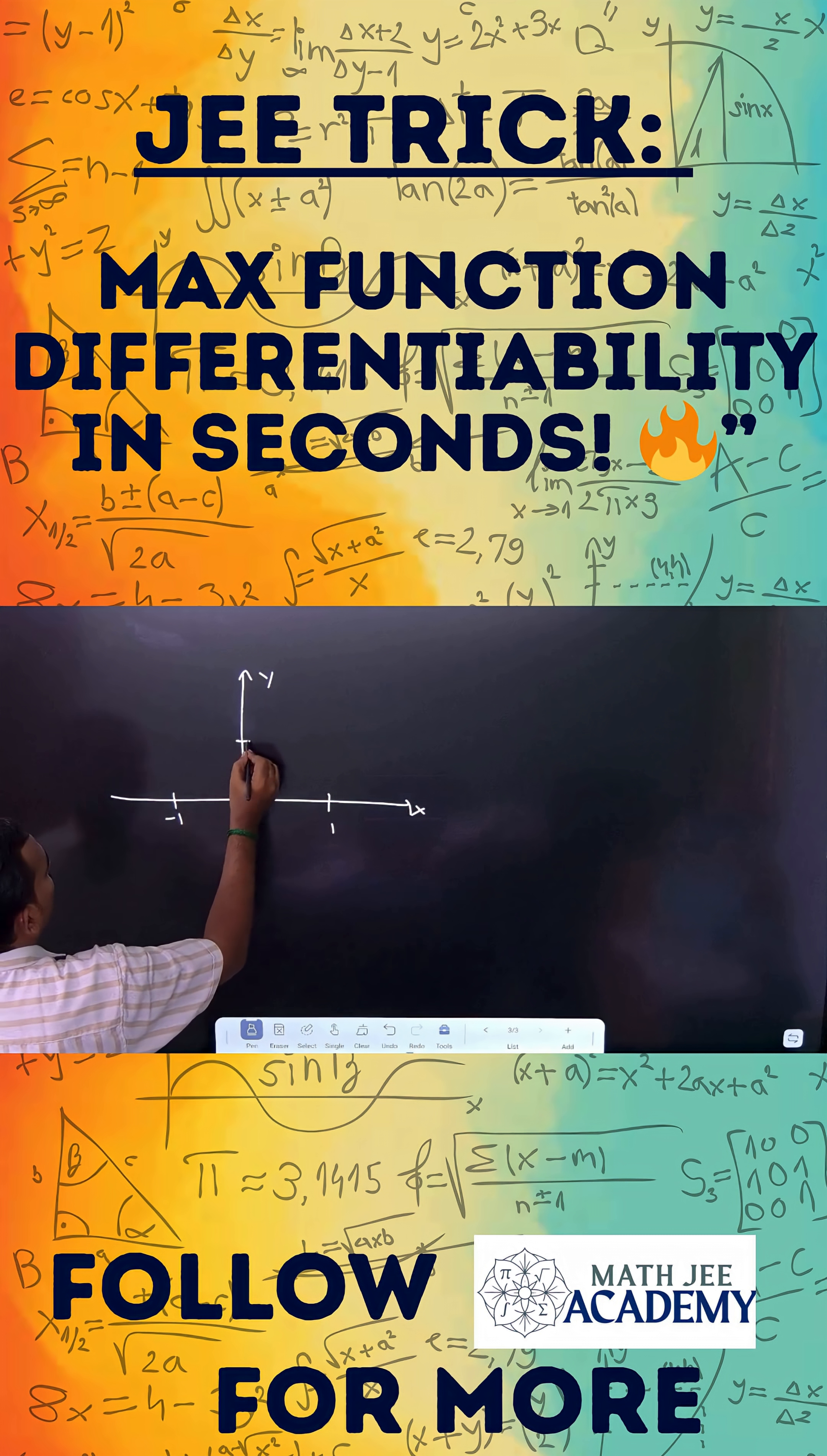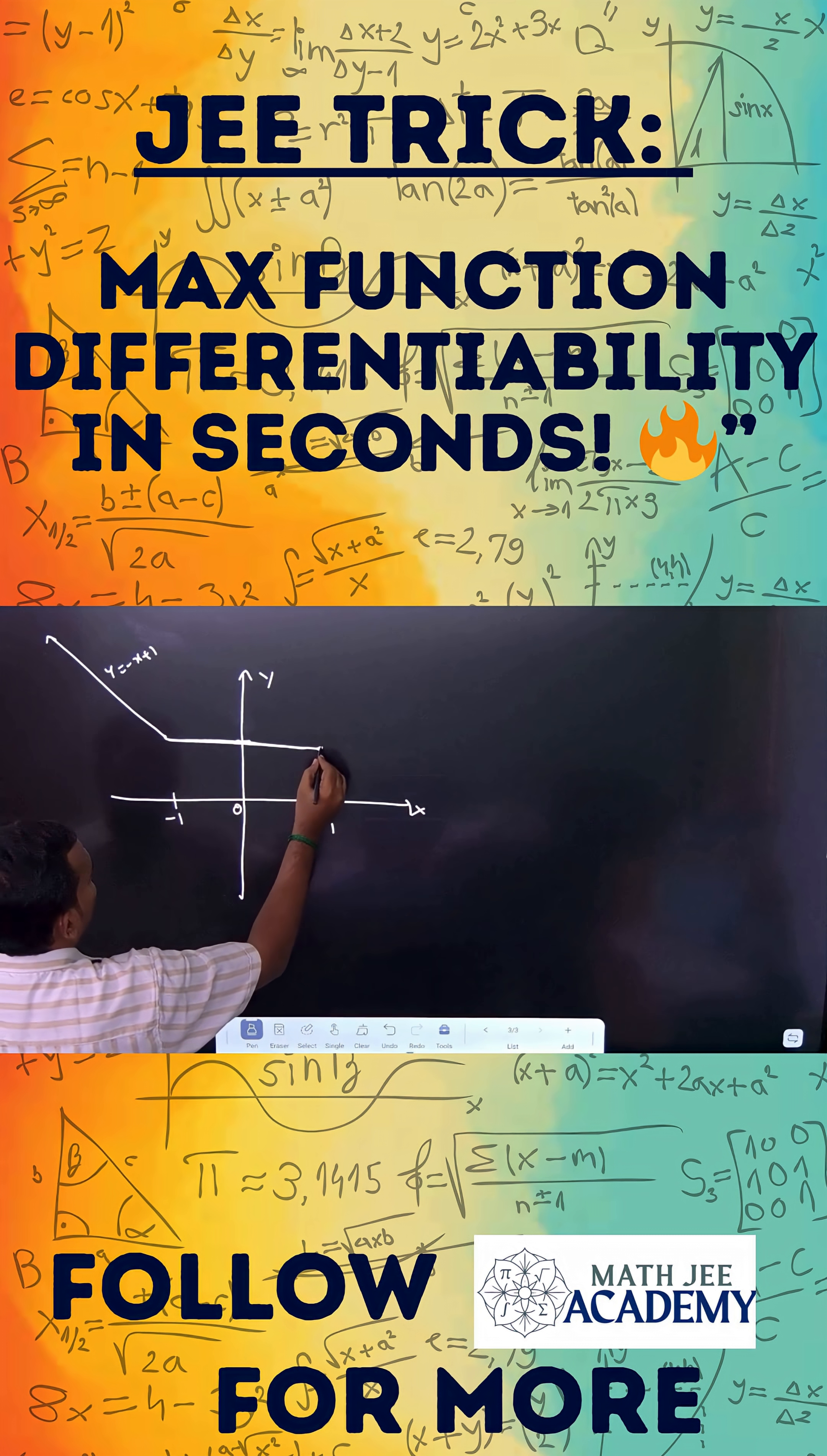If you put minus 1, it will be 2. This is the graph, y is equal to minus x plus 1 and minus 1 to 1, it is 2, y is equal to 2, right.